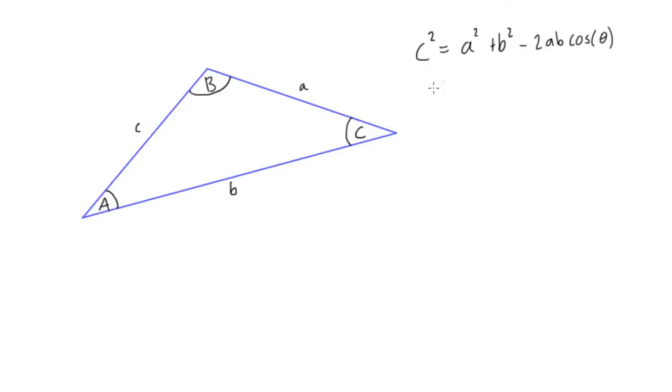We could also rewrite this another way, we could write this three different ways. We could write it maybe a squared is equal to c squared plus b squared minus 2cb cos theta, right?